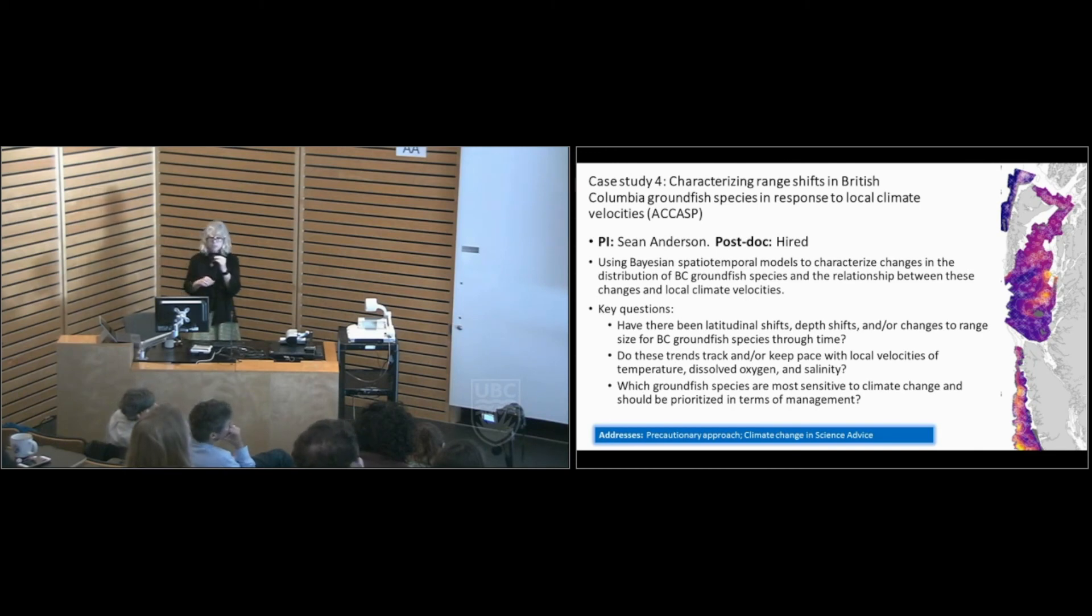And then another one by Sean Anderson, we've hired the postdoc for this one, characterizing range shifts in British Columbia groundfish species in response to climate velocities. Similar, very focused on groundfish, less focused on species interactions. Sean has developed Bayesian spatiotemporal models to characterize changes in the distribution of BC groundfish species and how these relationships are changing. And Sean's main question here is, have there been latitudinal shifts, depth shifts and or changes to range size for BC groundfish species through time? And because we have very detailed spatial survey data and very detailed commercial fishery data, which can to some extent possibly be informative about this, we can look at these questions in quite a bit of detail. And the main, I think, outcome for this in terms of helping resource managers is we can ask the question of which groundfish species are most sensitive to climate change and should be prioritized in terms of management.